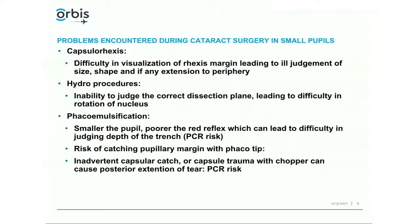The major brunt of this problem is borne by the phaco emulsification technique itself. The smaller the pupil, the poorer the red reflex, and red reflex largely guides the phaco. This is evident when you operate with no red glow — even in a soft cataract on oblique light, you find it difficult to judge. Similarly, if a patient has vitreous hemorrhage and there is no glow, continuing phaco becomes a very difficult task.